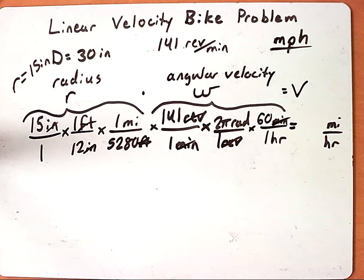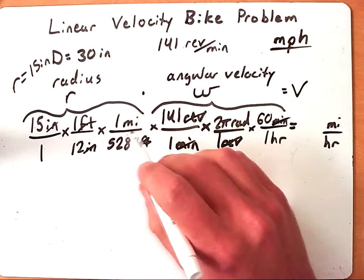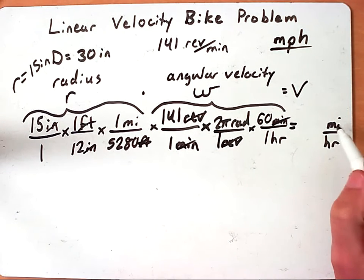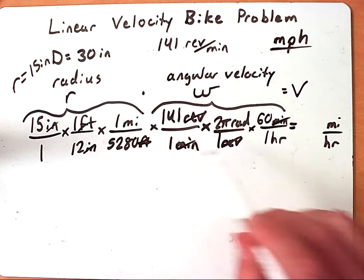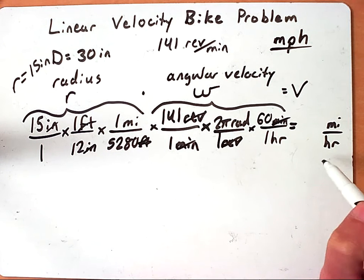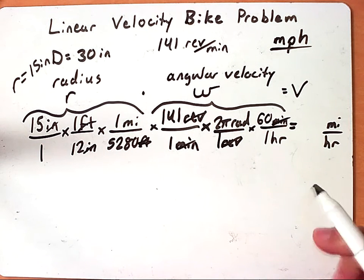So at this point, I always like to just do a quick glance to make sure I have the units I need. So on top, I have miles, which is what I want at the very end. I also have radians, which I need to be in to be in angular velocity. On bottom, I have hours, which is what I need to be in. So we are good to go. We have done all our conversions.